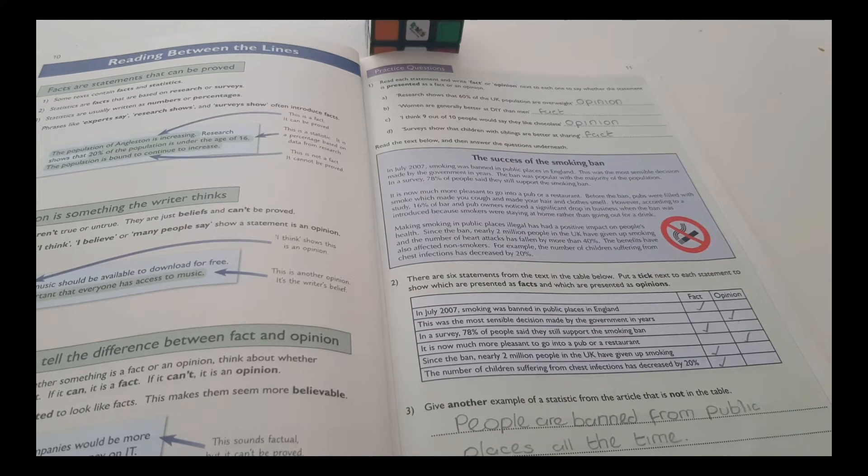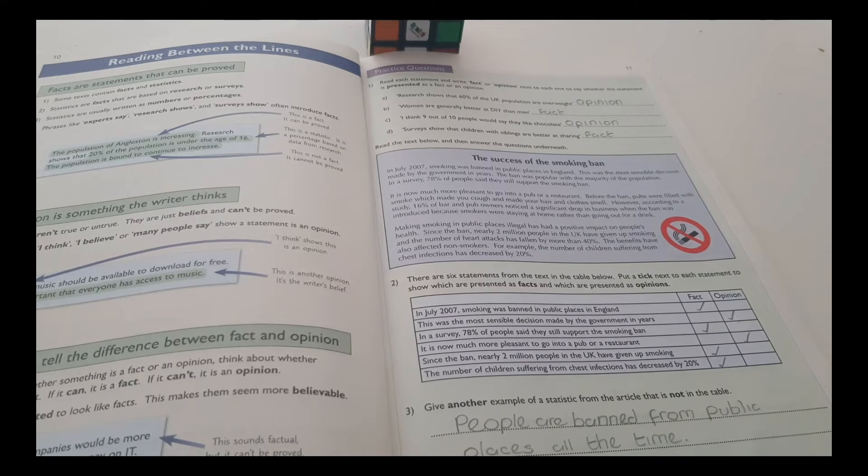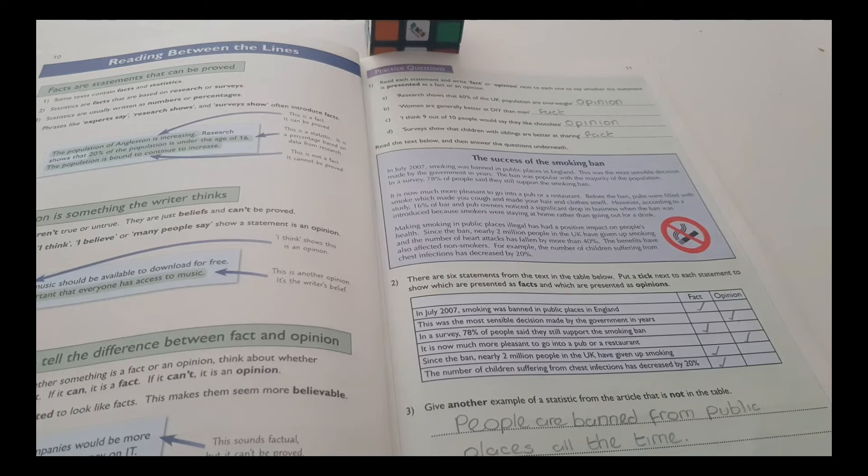Since the ban, nearly 2 million people in the UK have given up smoking. Fact. The number of children suffering from chest infections has decreased by 20%. Give another example of a statistic from the article that is not in the table.